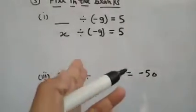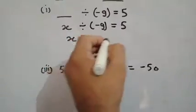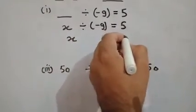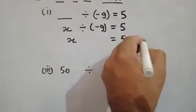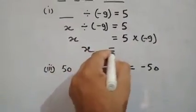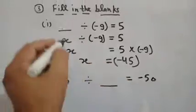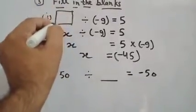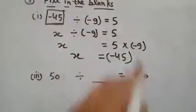Find the X. The divisor is transferred towards right side by multiplying minus 9, then X is equal to 5 times 9 is 45 with negative sign. So minus 45 is divided by minus 9 becomes 5.